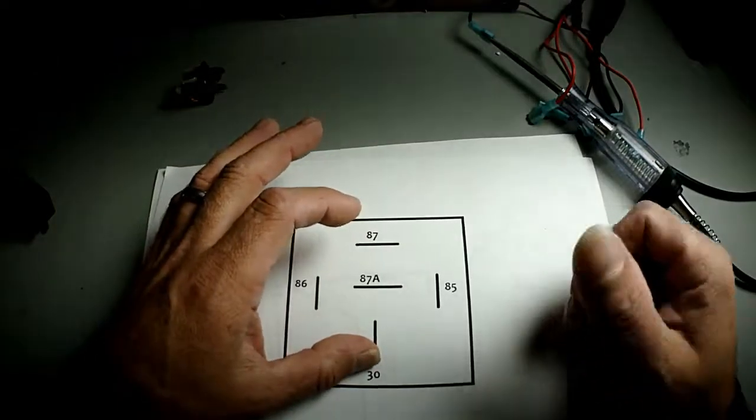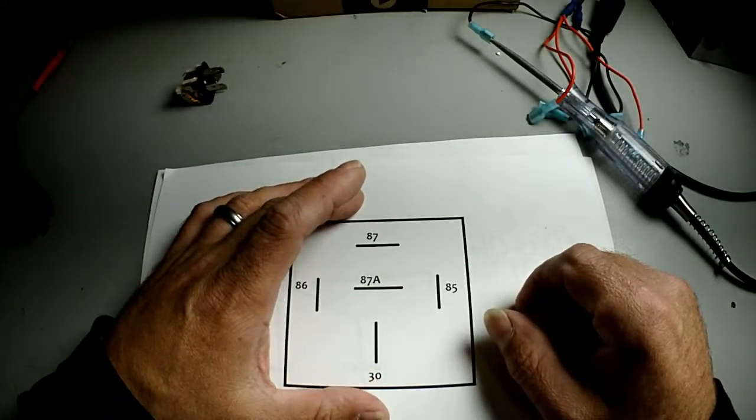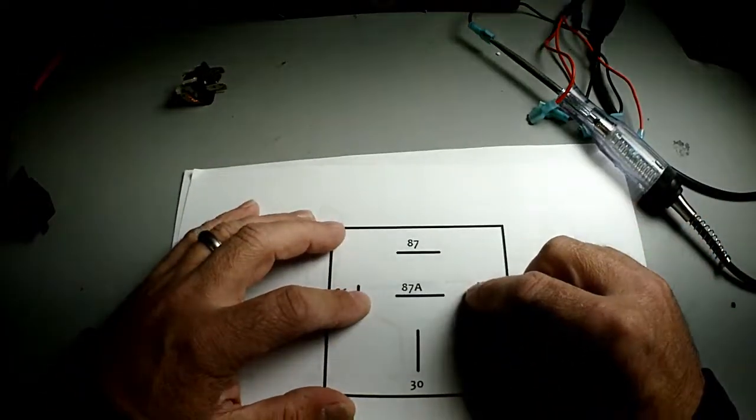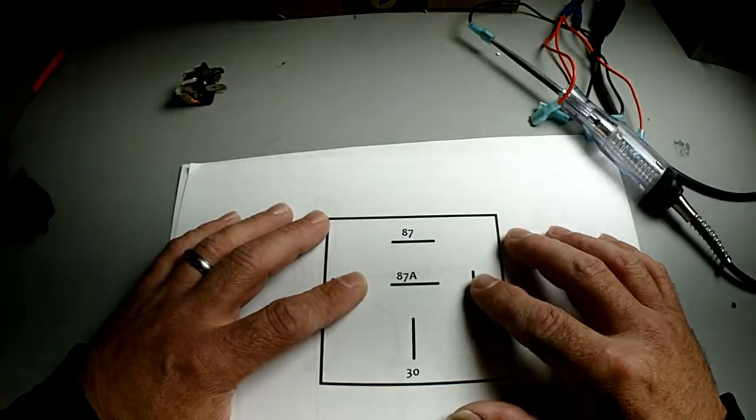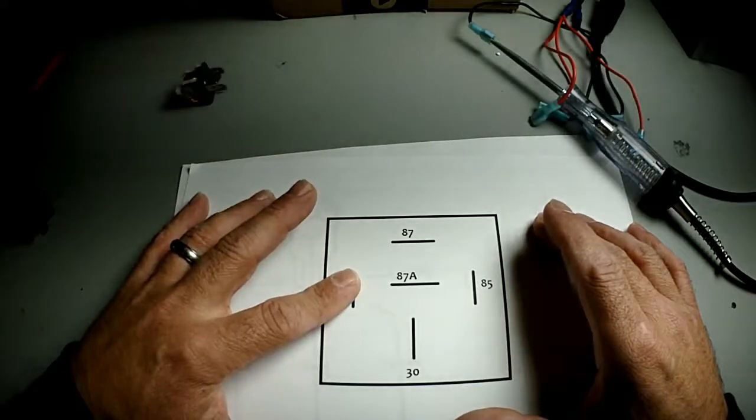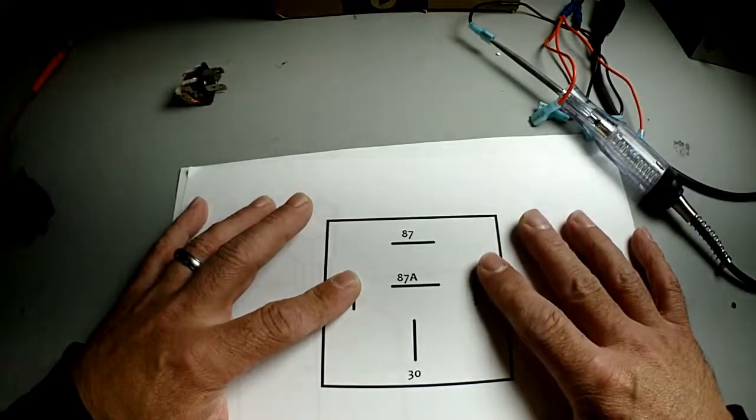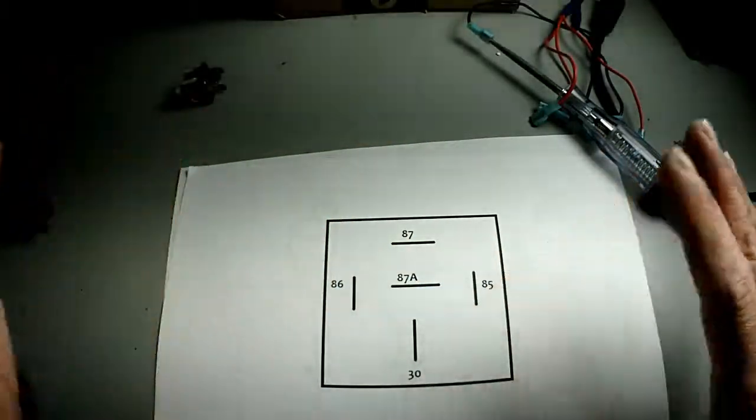But you still can use it for fog lights, turn-ons, whatever. There's a lot of uses you can use this for. So once again, 86 and 85 tie together through coil. 86 and 85 are the ones that charge the coil. One side will need to be power, one side will need to be ground. It doesn't matter which one is which, and it doesn't matter which one is the switch.